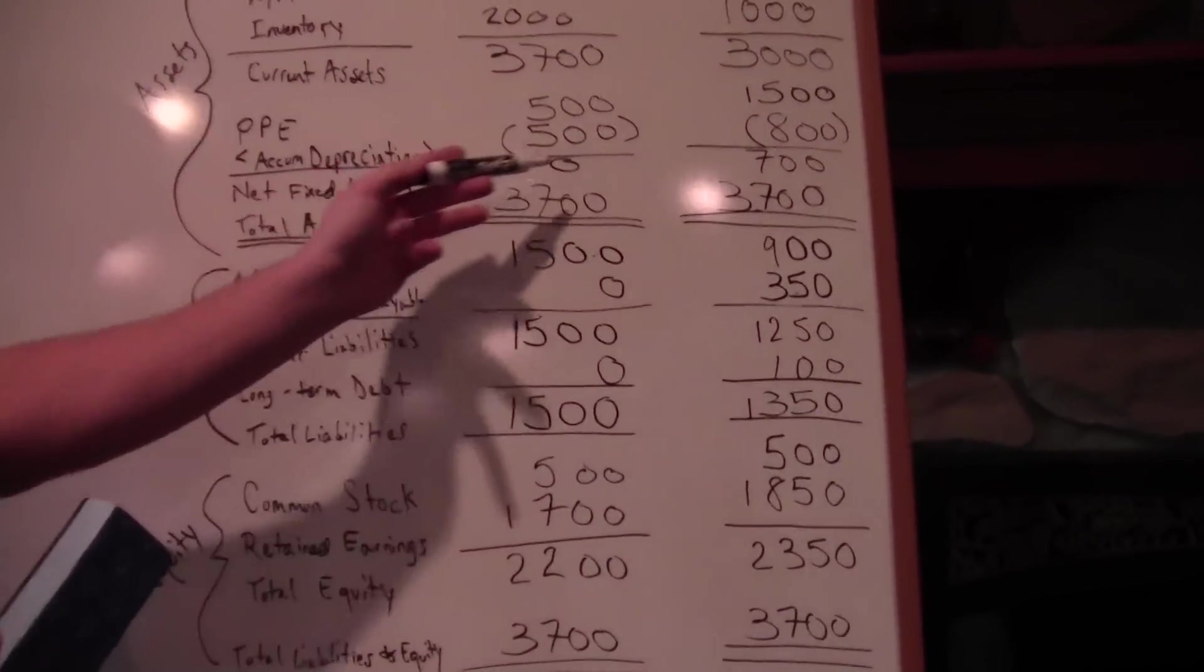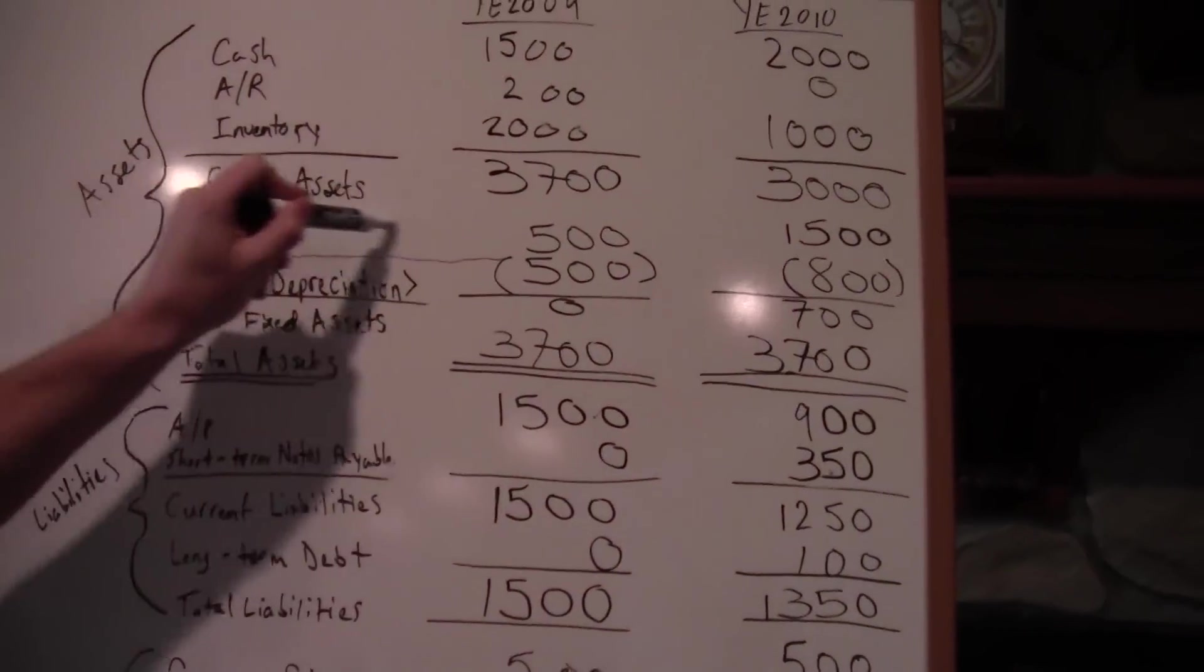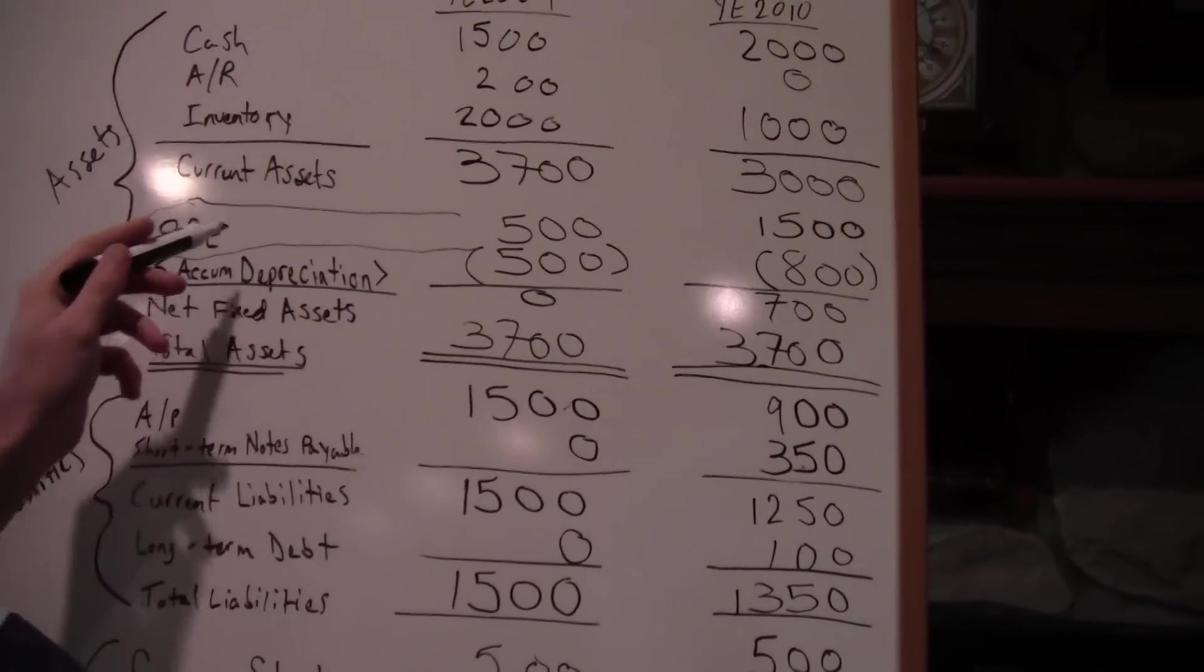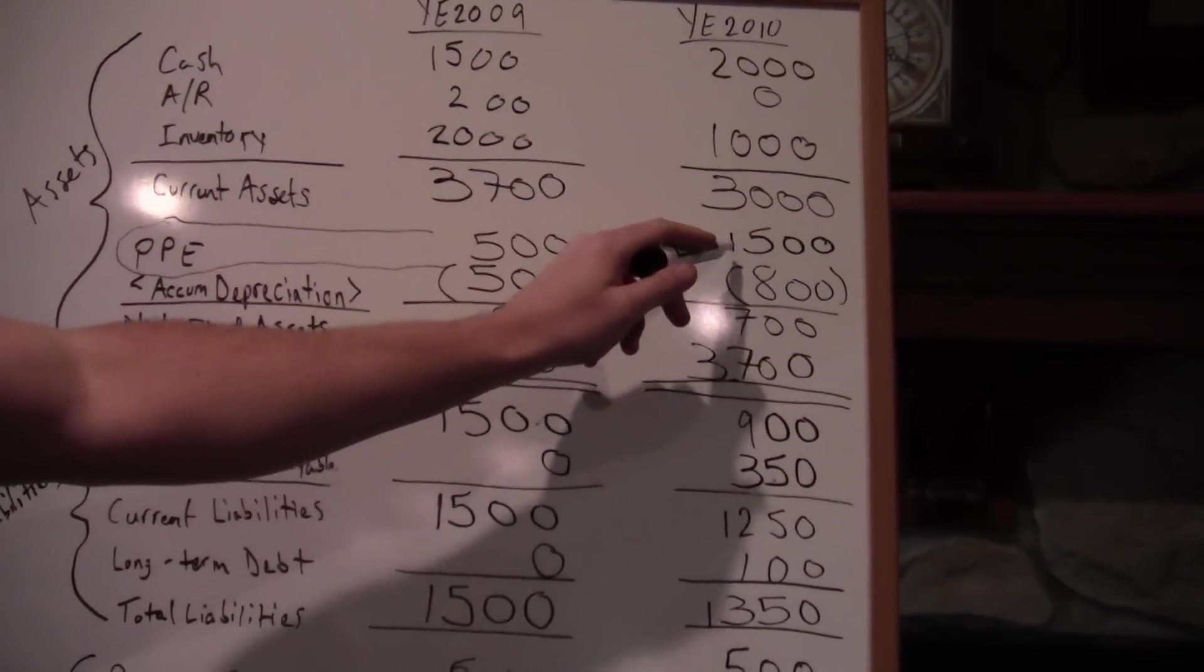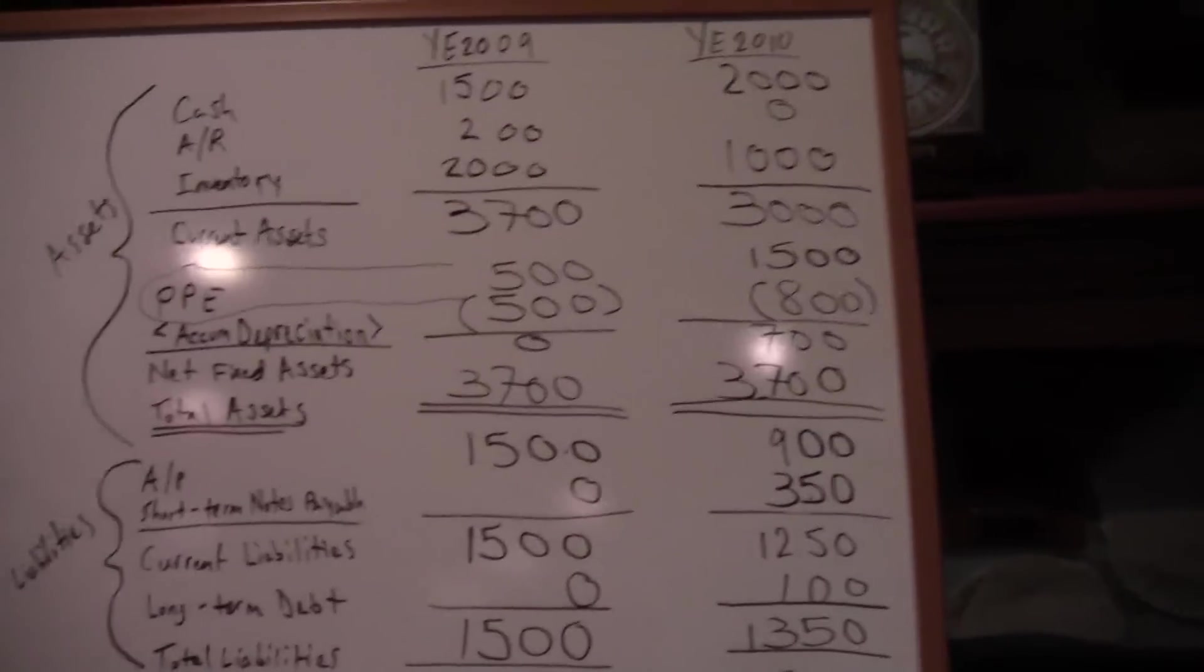So let's go back to our balance sheet. As you can see, we have net fixed assets here, but like I said, we're going to use this top layer. You can see how it connects through. I won't draw the line because my numbers are a little squished, but what we have is $1,500 in 2010 and $500 in 2009. So that's a difference of $1,000.